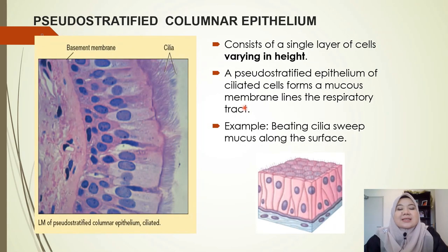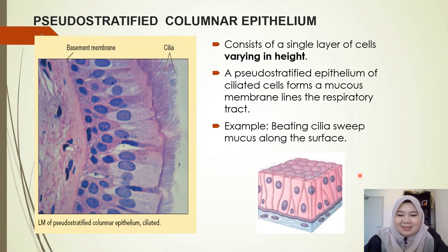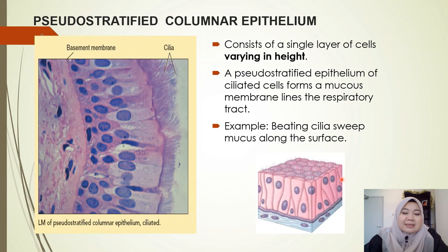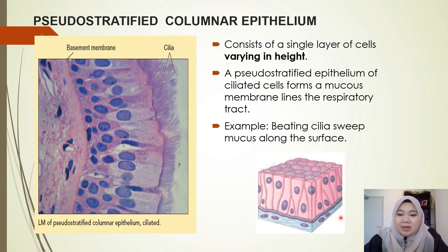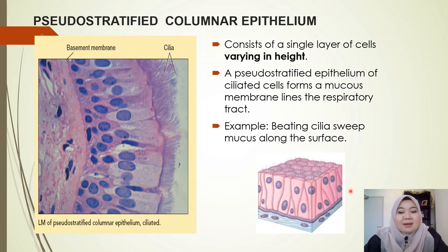The next one is the pseudo-stratified columnar epithelium. By looking at it from afar, you probably see what appear to be multiple layers — it looks like it is stratified. But if you look carefully, each single cell is attached to the basement membrane, which means it is actually a single layer. They look like multiple layers but are a single cell layer only.